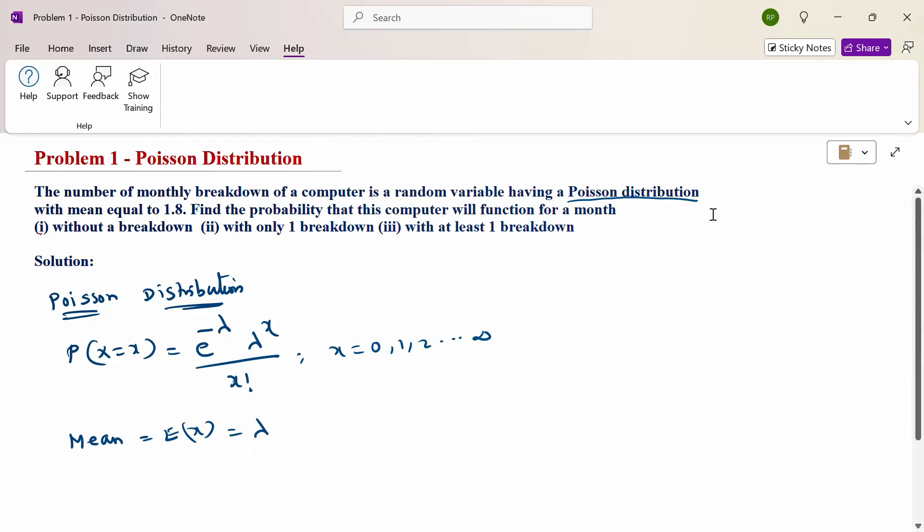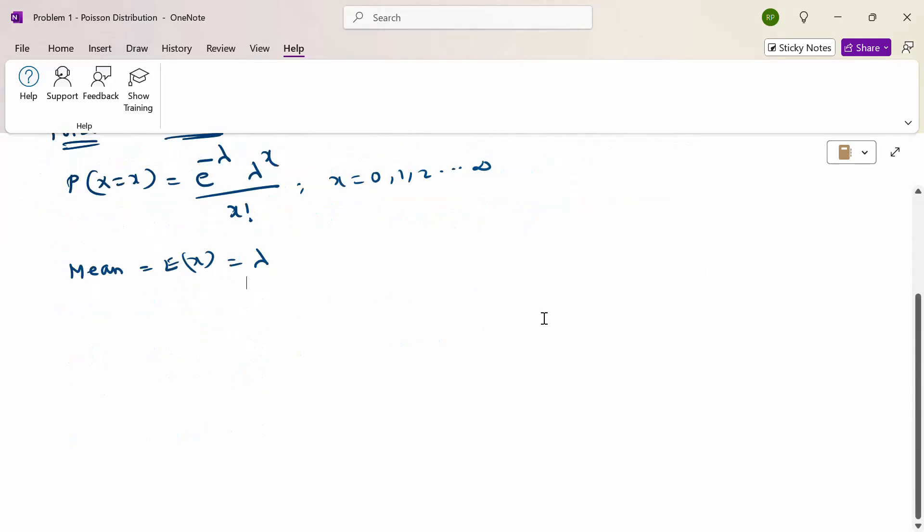Now, given Poisson distribution mean, expectation of x equals lambda. So this value given is 1.8. Now substitute this lambda equals 1.8 in the Poisson distribution function: probability of x equals e power minus 1.8, 1.8 power x by x factorial, x equals 0, 1, up to infinity.